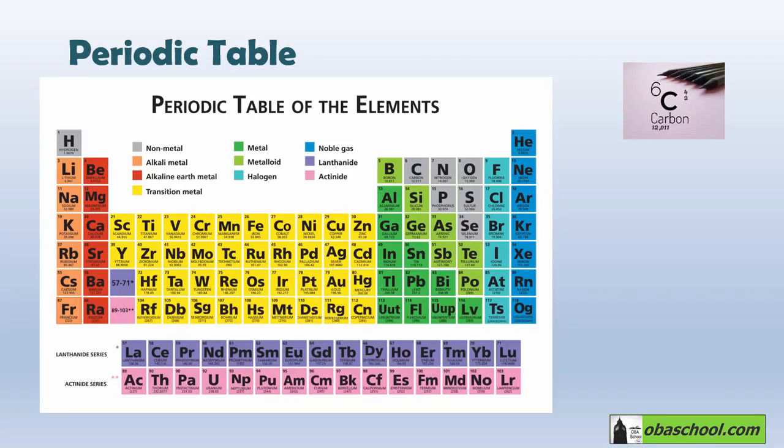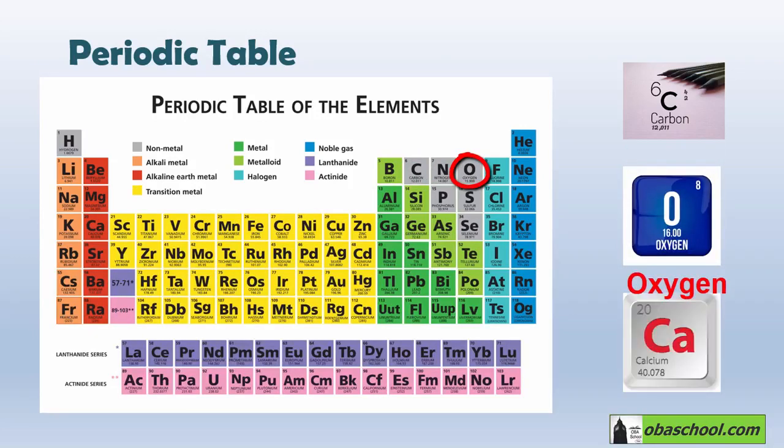For example, a capital letter C represents everywhere and at any time the element carbon. A capital letter O will represent the element oxygen, and calcium, for example, is represented with the symbol CA.